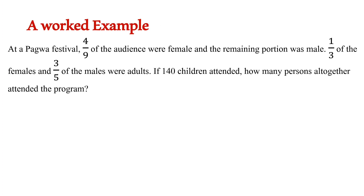Here's a good example. At the Pagwa Festival, four-ninths of the audience were female and the remaining portion was male. One-third of the females and three-fifths of the males were adults. If 140 children attended, how many persons altogether attended the program? To solve this problem we are going to use Pólya's process.